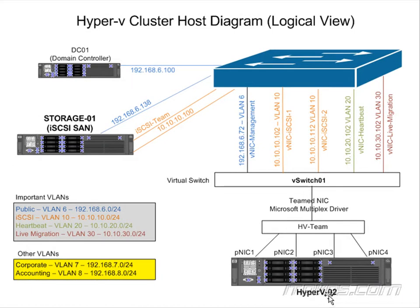Here's a closer look at Hyper-V02, configured exactly the same way — just with different IP addresses. The nice thing about this setup is that if one physical NIC goes down, all three other NICs are still functioning. So we have not only load balancing across all NICs but also failover. If any one NIC goes down, the other three handle all the different types of traffic. Even if two NICs fail, all traffic goes over the remaining two NICs.